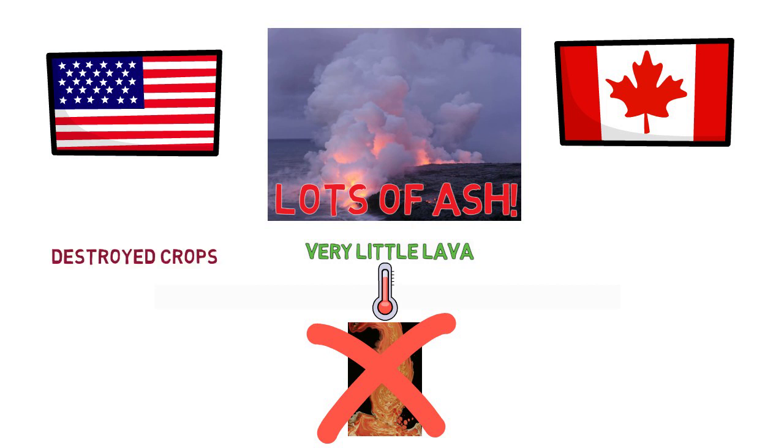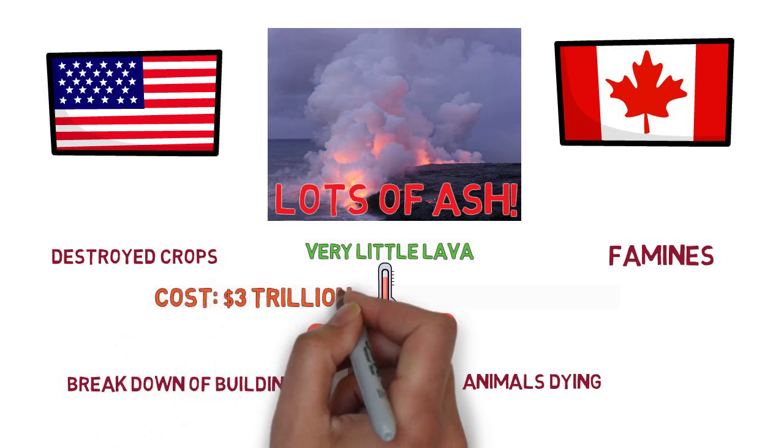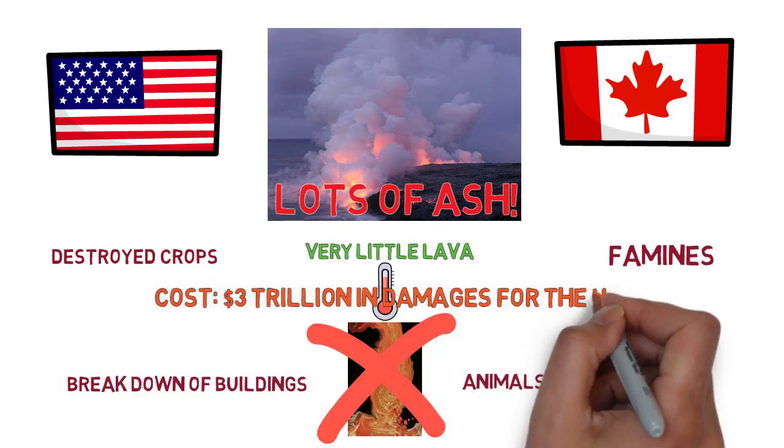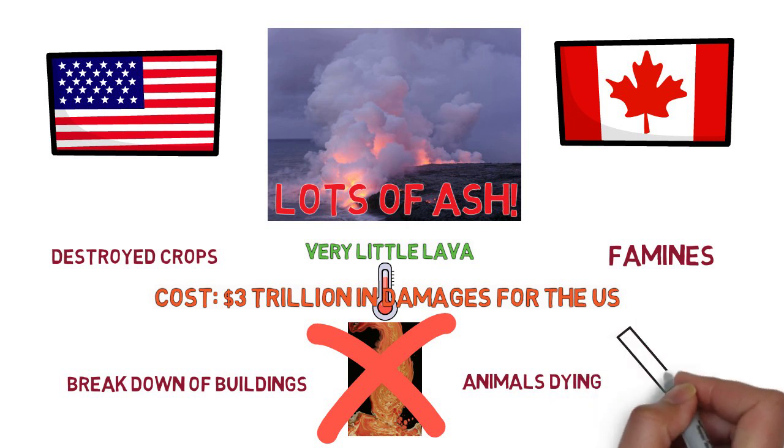Destroying crops and plants, causing famines, killing animals and breaking down buildings. Considering the time frame for which this ash being spread across the north of America, the damage done to the surrounding states would be devastating, costing the US approximately 3 trillion dollars in damage costs, with a huge decline in population.